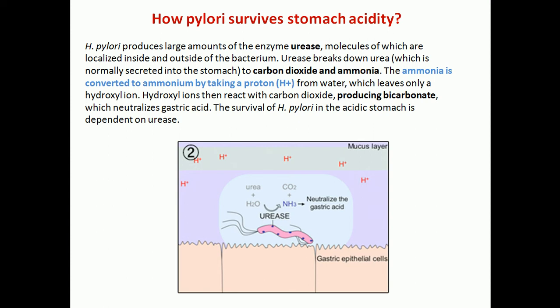The carbon dioxide that resides there interacts with hydroxyl ions, which are also pretty common since water is always available. So carbon dioxide interacts with hydroxyl ions to produce bicarbonate, and it is this bicarbonate — not ammonia — that neutralizes the gastric acid. The CO₂ binding with surrounding hydroxyl ions is finally converted into bicarbonate, which reduces the acidity.